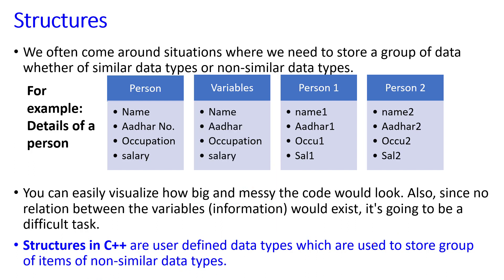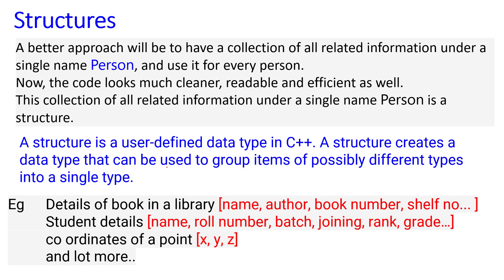The name will be a character or string, Aadhaar number will be integer, occupation will be character or string, and salary can be integer. So we are mixing character as well as integer in this collection.